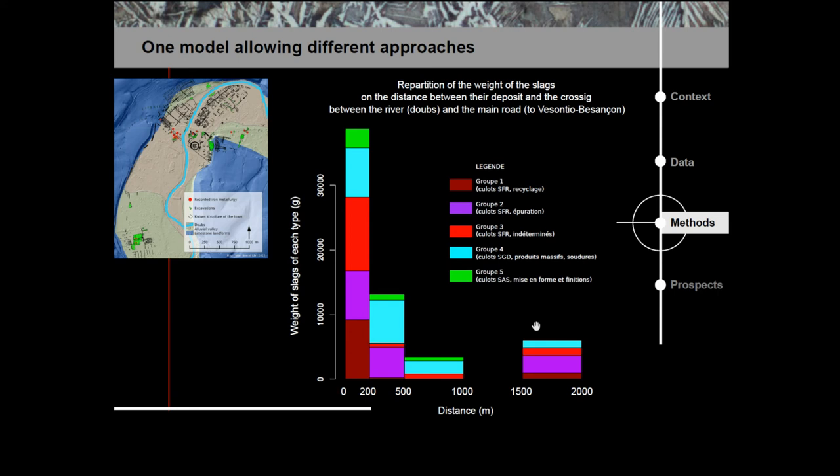This model can allow different approaches. As an example, I showed here the weight of each type of slags, depending on the distance between the deposit and the crossroad between the river and the main road going to Besançon. We can see that there is a very important impact of the roads to the production with a huge concentration of these remains near this crossroad.